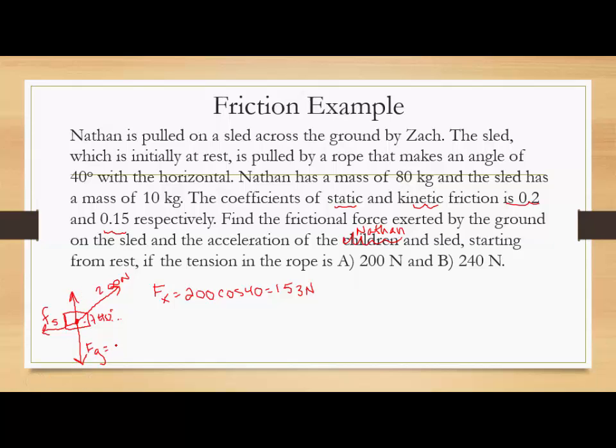So we need to find our normal in order to do that, right? This weight is going to be 900 newtons because that's the sled plus Nathan times 10. And then your normal force is going to be the difference between 900 and whatever this y component is. So let's find our y component here, so that's sine. That would be 129. So our normal force then is going to be 771 newtons. So our coefficient of static is the frictional static force divided by your normal. So we have 0.2 equals static friction over 771, so that gives us a frictional force of 154.